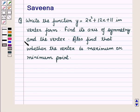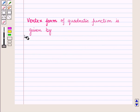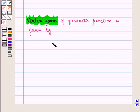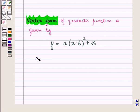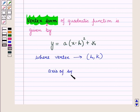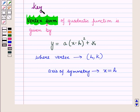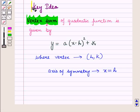Now before starting the solution of this question, we should know a result. The vertex form of a quadratic function is given by y is equal to a into x minus h whole square plus k, where the coordinates of the vertex are given by h and k, and the axis of symmetry is given by the equation x is equal to h. This result will work out as a key idea for solving the given question.